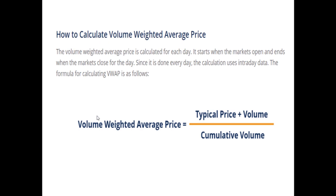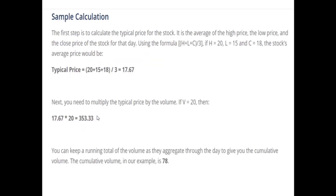The formula for calculating Volume Weighted Average Price is as follows: VWAP equals typical price multiplied by volume, divided by cumulative volume. The first step is to calculate the typical price of the stock, which is the average of the high price, the low price, and the close price of the stock for the day.